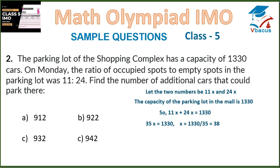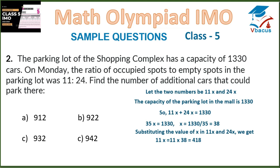So, 35x is equal to 1330. X will be 1330 divided by 35, that is 38. Substituting the value of x in 11x and 24x, we get 11x is equal to 11 times 38, that is 418. So, the number of additional cars that could be parked is 912, which is in option A.